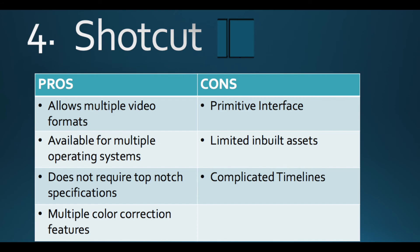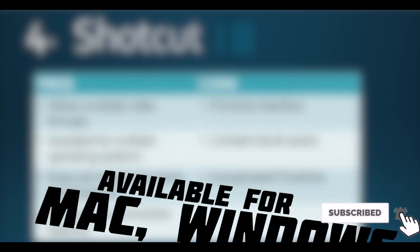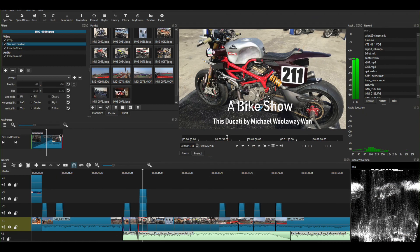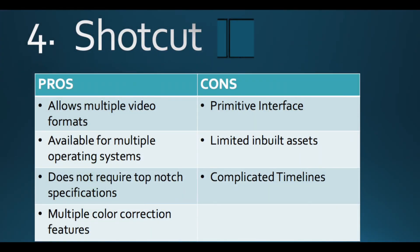The fourth software in this list is Shotcut. The software is free, powerful, and beginner-friendly. It is available for Mac, Windows, and Linux, and supports many file formats. It does not require top-notch specifications and has multiple color correction features. Its interface is more primitive compared to the advanced interfaces seen in the previous software. Coming back to the cons — it has a primitive interface and limited built-in assets, and also has complicated timelines. Anyways, it is also a pretty good software for editing.